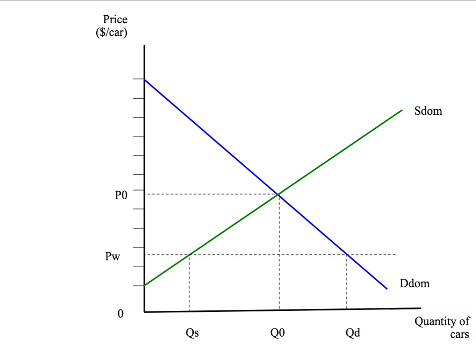Let's start with our standard trade diagram. We've got the situation here where we're looking at an import. So the world price, PW, is below the autarky domestic price, P0. The level of imports is the difference between the quantity domestic consumers want to buy at the world price, given by the domestic demand curve, and the quantity of cars that domestic producers want to sell at the world price, given by the supply curve. So the level of imports is simply this gap between QD and QS.